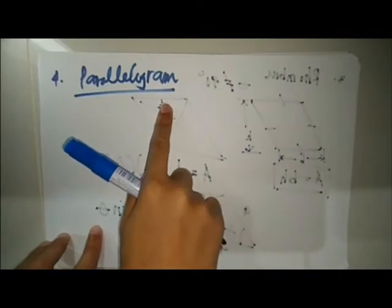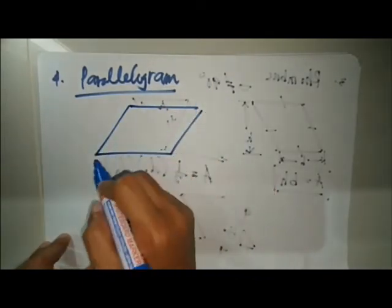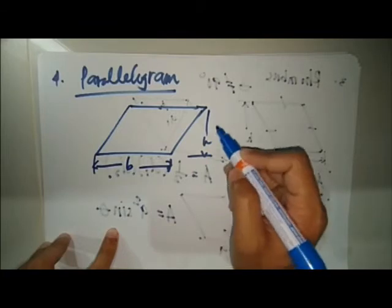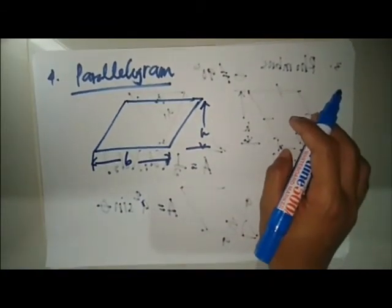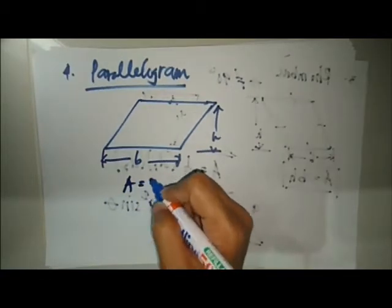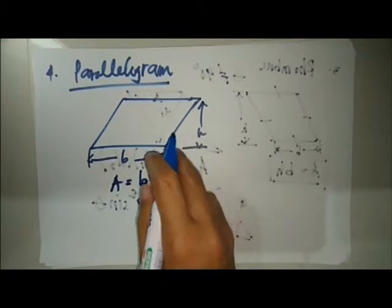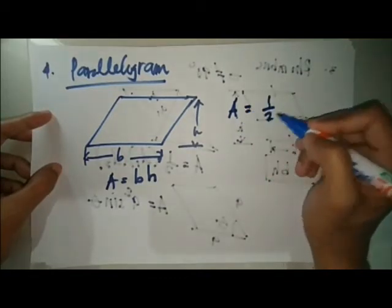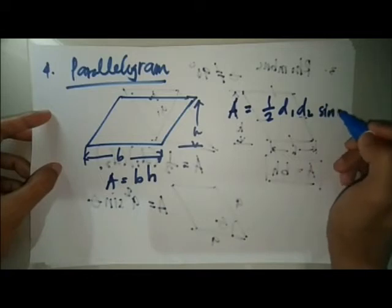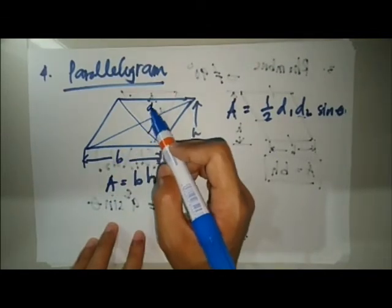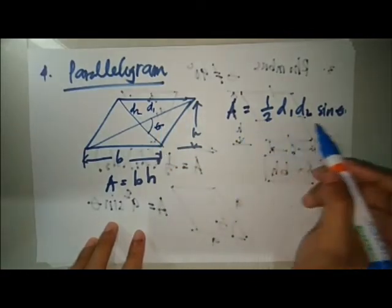A parallelogram has two pairs of parallel sides. The area is the same formula: base times height. In fact, a square, rectangle, and rhombus are all parallelograms. For a parallelogram, the area is base times height. If diagonals are given, the area equals one half times d1 times d2 times sine of the angle between those diagonals.